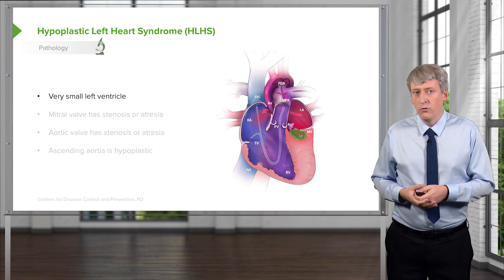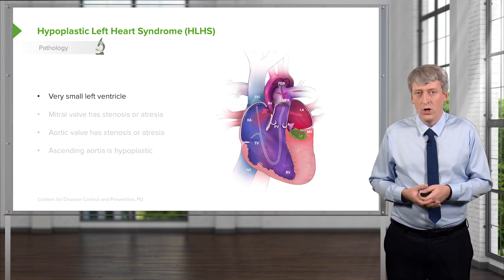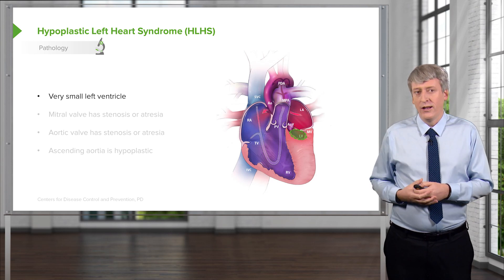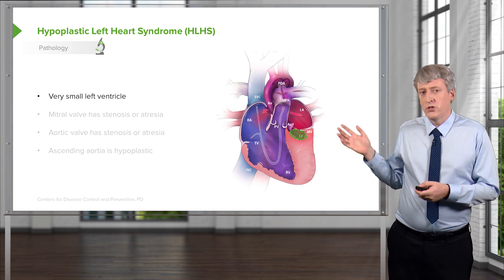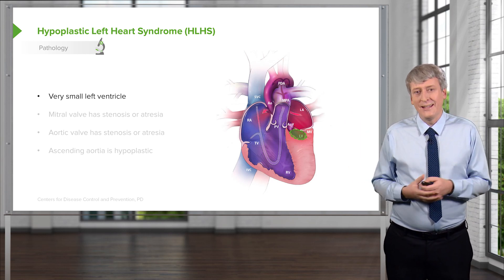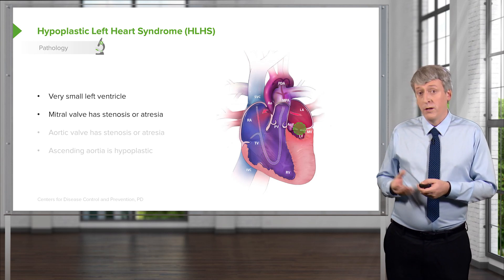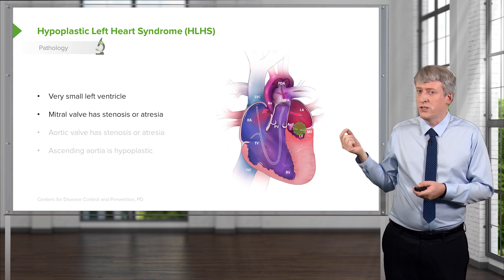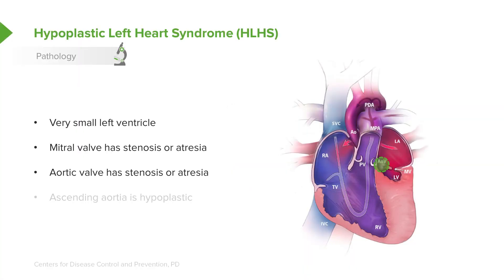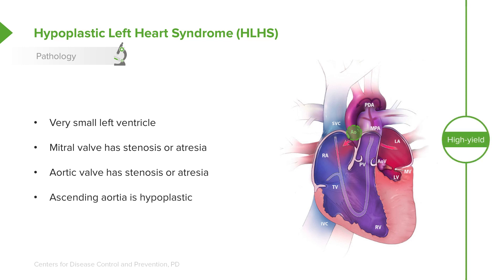The classic syndrome people think of is hypoplastic left heart syndrome — this is a high yield area on exams. In hypoplastic left heart syndrome, you have a very small left ventricle; it's almost like it isn't there. Therefore, the mitral valve is stenotic or atretic, and blood has a hard time getting into that very small left ventricle. The aortic valve is also stenotic and atretic, and the ascending aorta is hypoplastic — a tiny thread of an aorta. The problem is really mostly on the left side of the heart.